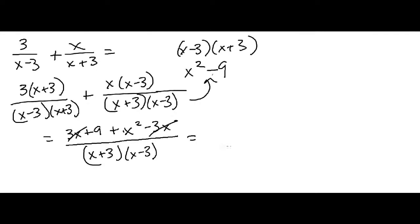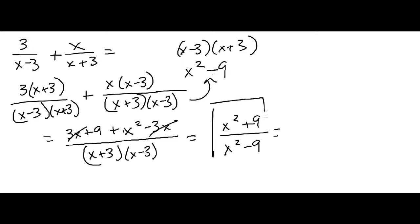So we have a 3x and a minus 3x which is going to be 0. So now we have x squared plus 9 over — I'm now going to write this in the multiplied out form — which is x squared minus 9. And from there that is pretty much all we can do, so this here is your answer.